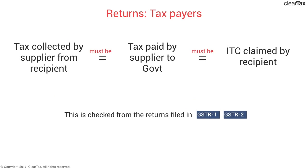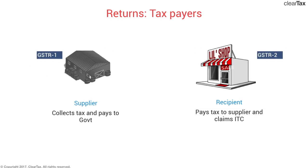We've seen that the tax collected by the supplier from the recipient has to be equal to the tax paid to the government, and that has to be equal to the input tax credit claimed by the recipient. This entire thing is checked by returns filed in GSTR 1 and 2. GSTR 1 is the return filed by the supplier who collects tax and pays it to the government, while GSTR 2 is filed by the recipient who pays tax to the supplier and claims input tax credit on the same.